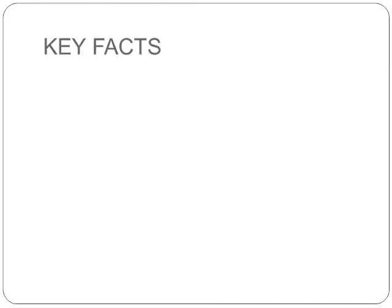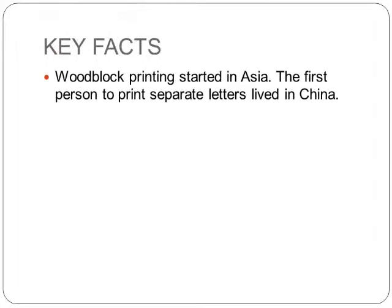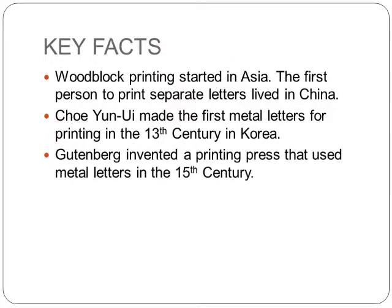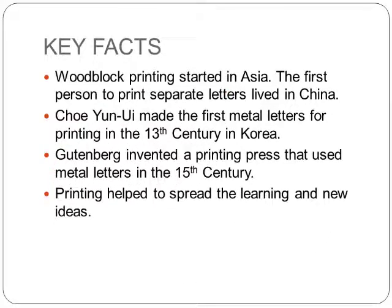Let us go through the key facts we have learned from this chapter. Woodblock printing started in Asia. The first person to print separate letters lived in China. Choyun-Oi made the first metal letters for printing in the 13th century in Korea. Gutenberg invented a printing press that used metal letters in the 15th century. Printing helped to spread learning and new ideas.